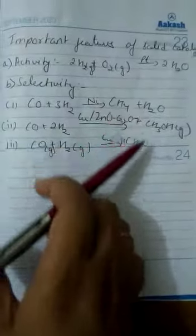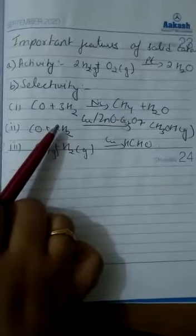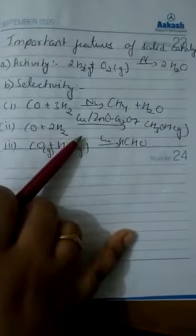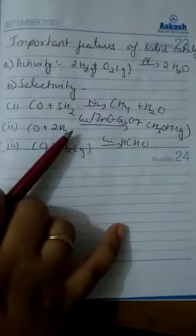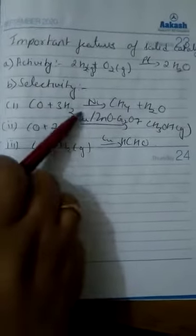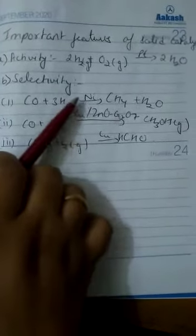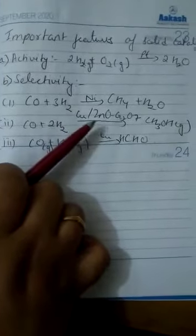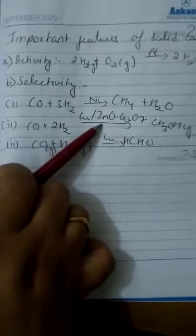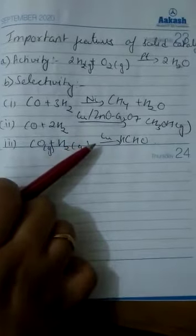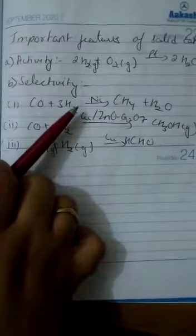What is the main cause for these different products if the reactants are same? The main cause is that in all these cases we are using different catalysts. Here we are using nickel, here copper in the presence of zinc oxide and chromium oxide, and here copper alone.